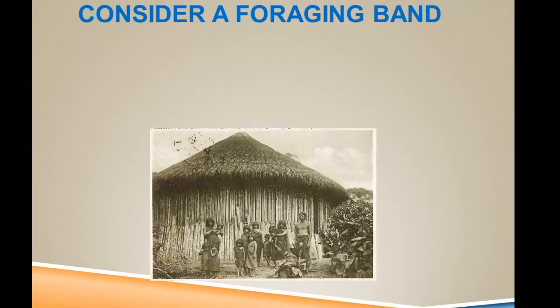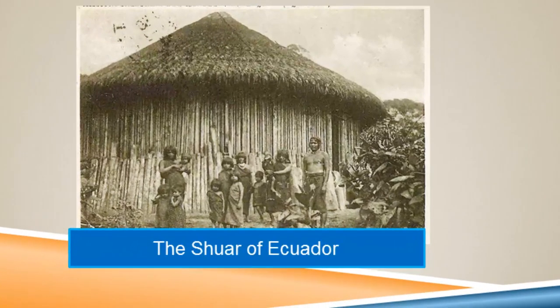We'll look at that later in terms of a mathematical model called the prisoner's dilemma, but for right now we're going to look at the characteristics of small-scale human societies. Here's a Shuar house — the Shuar live in Ecuador and practice hunting and gathering and some horticulture. They're a small-scale, face-to-face society, and it's quite likely that two band members will see each other more than once. This is critically important for reciprocal altruism: you need to interact repeatedly, and this is certainly a condition that was present over the long run of the Pleistocene in small-scale human societies.